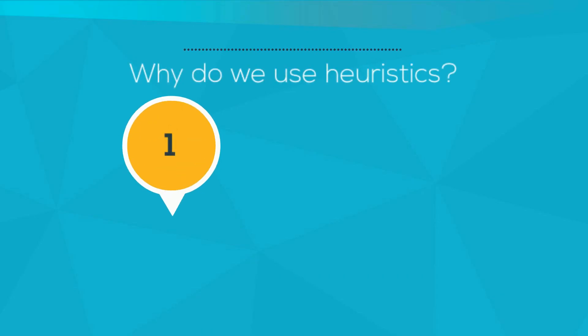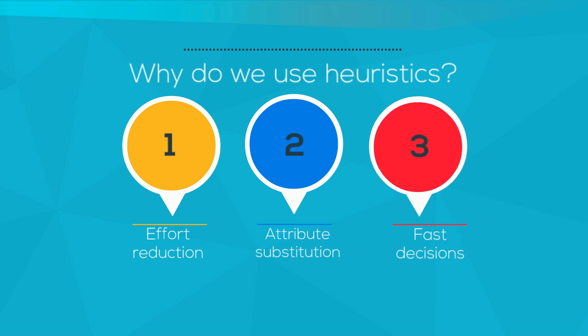In a nutshell there are many reasons why we make use of heuristics. We have listed a few of them for you here. First, effort reduction. People make use of heuristics because of cognitive laziness. Heuristics reduce the mental effort that is required to make decisions.